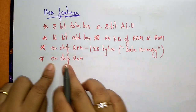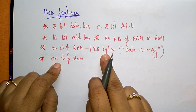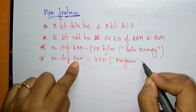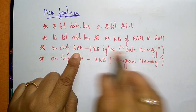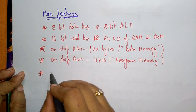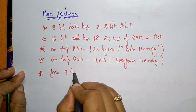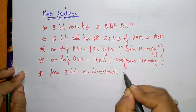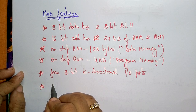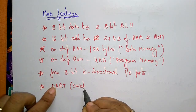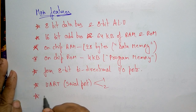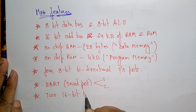The 64 kilobytes of RAM and ROM is divided into 128 bytes of data memory, and the on-chip ROM consists of 4 kilobytes of memory used for program memory. On-chip ROM stores the program memory, whereas RAM stores the data memory. Another feature: it has four 8-bit bi-directional I/O ports. The 8051 microcontroller also has one or two UARTs — Universal Asynchronous Receiver Transmitter — which is a serial port.